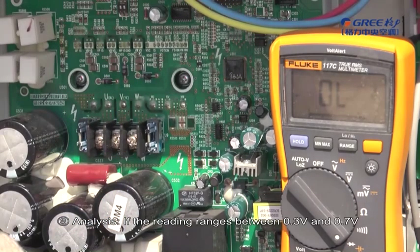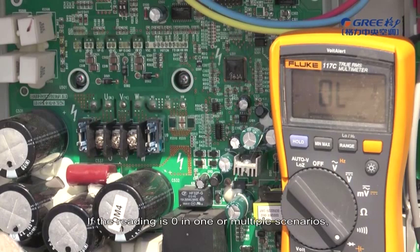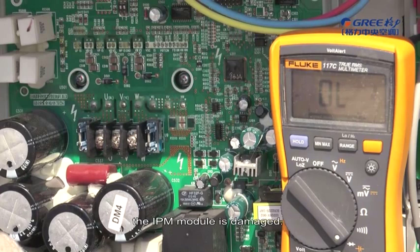If the reading ranges between 0.3V and 0.7V in the above mentioned 6 scenarios, the IPM module is normal. If the reading is 0 in one or multiple scenarios, the IPM module is damaged.